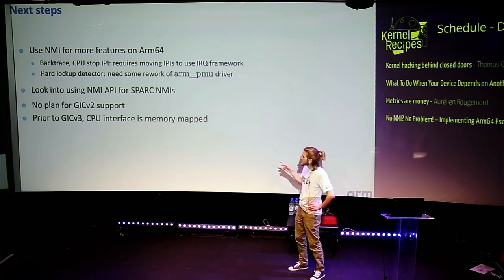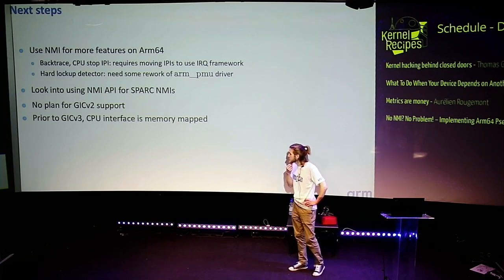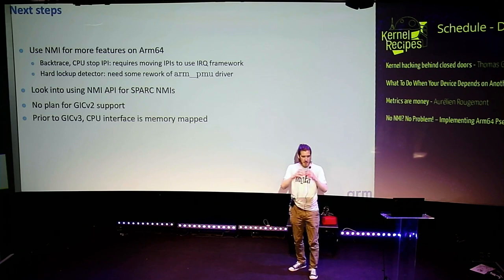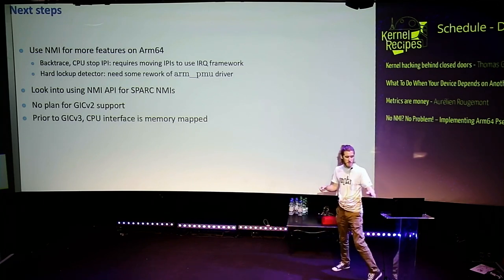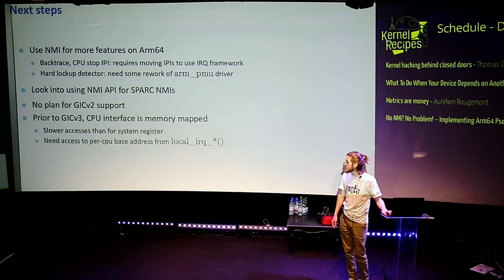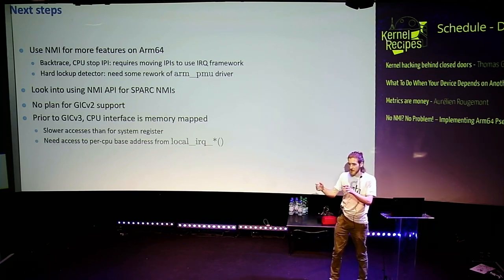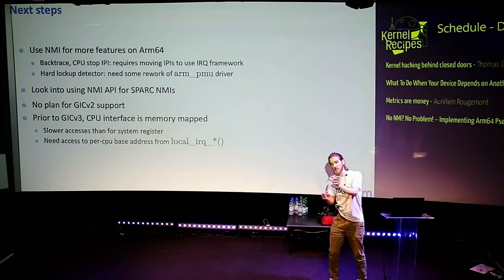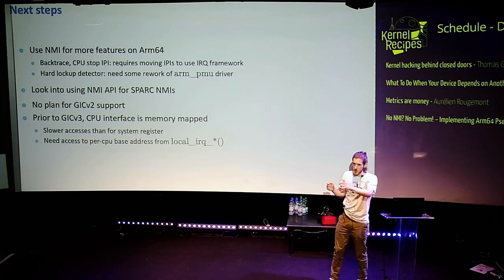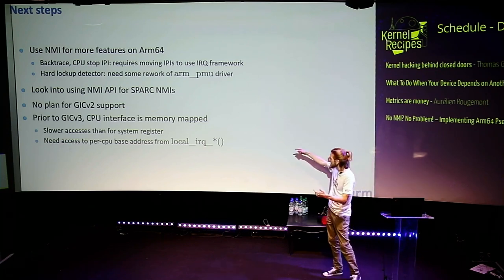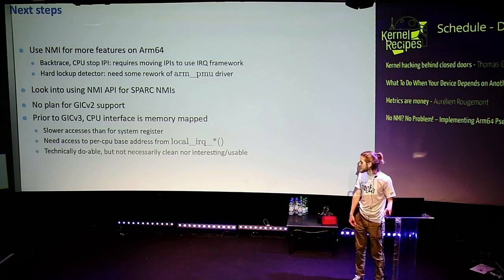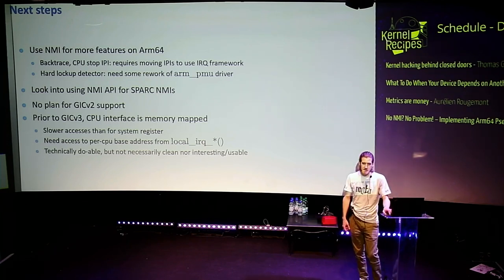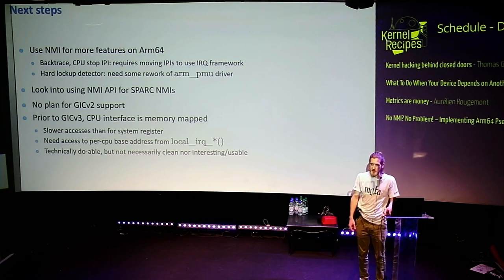We don't plan to support GICv2 because GICv3 has direct CPU registers for the PMR, while GICv2 has memory-mapped registers which are much slower. With memory-mapped registers, instead of a direct CPU register access, you would need to know the base address of your register bank and access that from local_irq_enable and disable. It's doable, but would have terrible performance. It's probably very ugly to do as well.